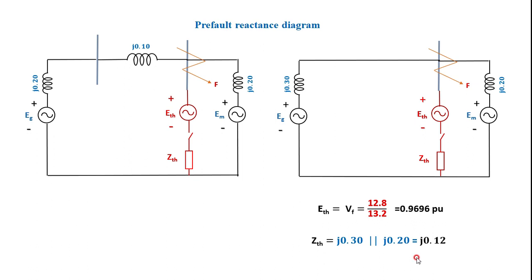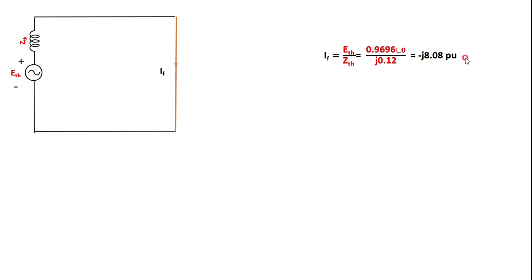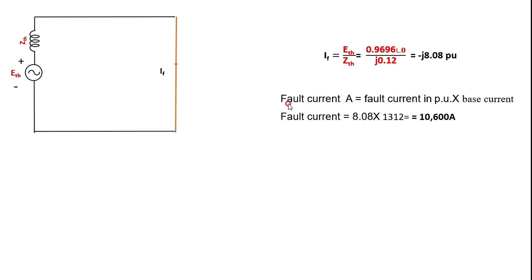The simplified Thevenin equivalent circuit has the Thevenin voltage source ETH = 0.9696∠0° and the Thevenin reactance j0.12 in series, from which the fault current is calculated. The fault current equals ETH divided by ZTH: 0.9696∠0° divided by j0.12, giving a fault current of -j8.08 per unit. Multiplying by the base current of 1312 amperes gives a total actual fault current of 10,600 amperes.